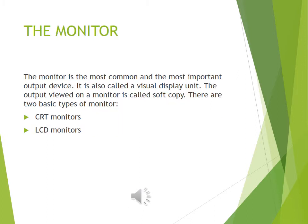Output devices are hardware devices that present output to users in human-readable form. The monitor is the most common and the most important output device. It is also called a visual display unit. The output viewed on a monitor is called soft copy. There are two basic types of monitors: CRT monitors, known as cathode ray tube monitors, and LCD monitors, known as liquid crystal display monitors.